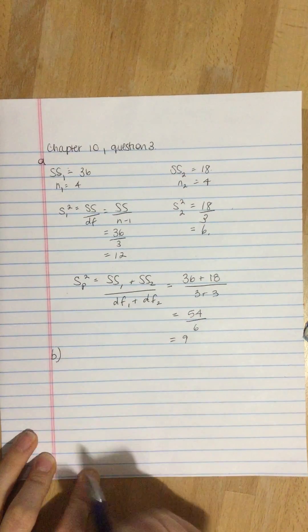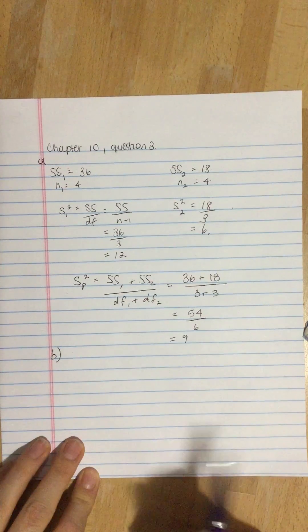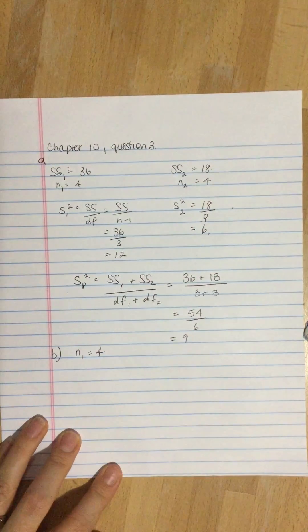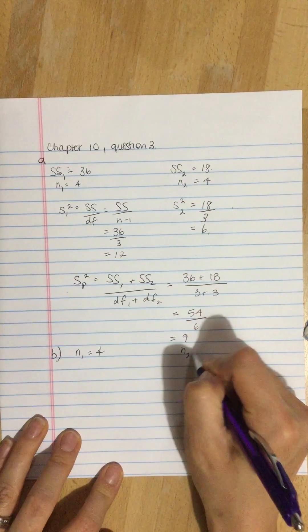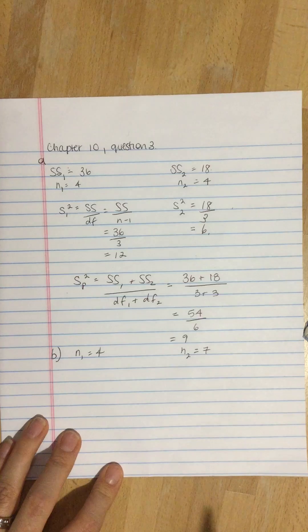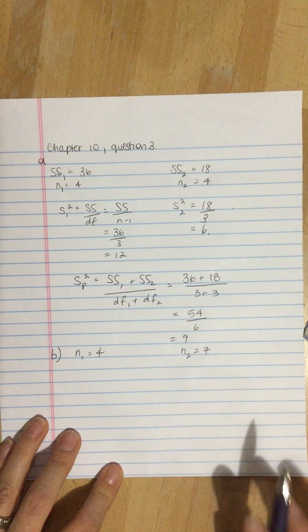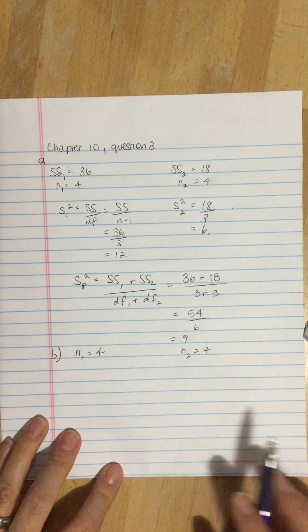Question B, chapter 10, question 3B. Now assume that n equals 4 for the first sample and n equals 7 for the second. Again, calculate the two sample variances and the pooled variance. You should find that the pooled variance is closer to the variance for the larger sample.